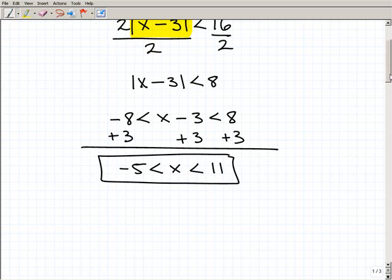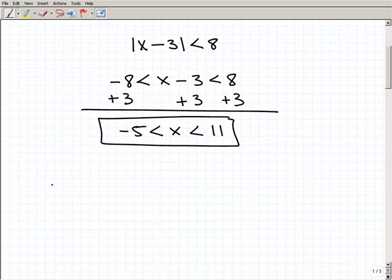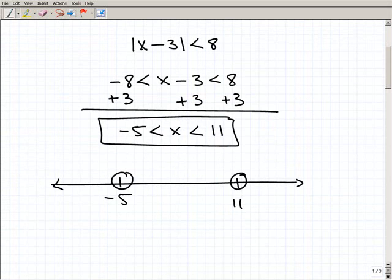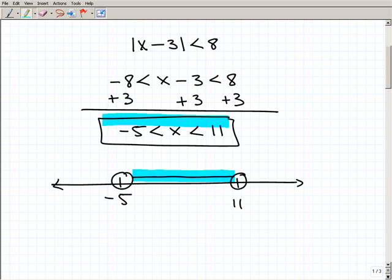So this would be your solution, and probably your teacher would want to see that in terms of a graph, so let's go ahead and just draw that real quick. So here's negative 5, here is 11, I have a circle and a circle and a line that connects the two. That means that all these numbers between negative 5 and 11 are the solutions, so this is a compound inequality. All right, and then notice here, I did not fill in these circles.